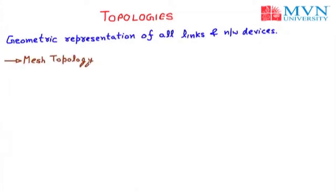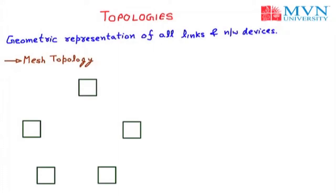To understand the mesh topology, let us take the example of five computers. I am going to provide names to all five computers as C1, C2, C3, C4, and C5. In this example, we have five nodes and they are interconnected with each other with all possible connections.